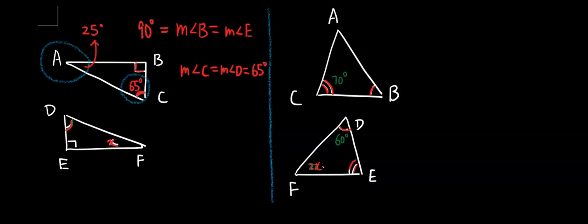Another rule called the third angle theorem says that in two triangles, if you already have the first pair congruent, which is B and E, and the second pair congruent, which is C and D, guess what? The third pair must be congruent.